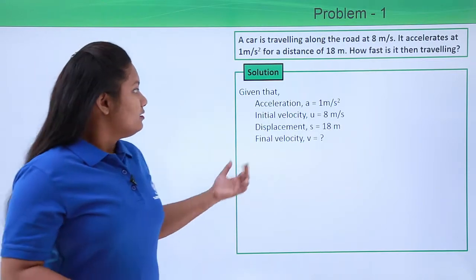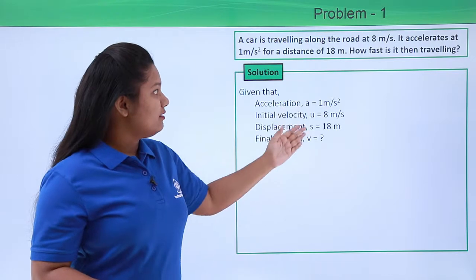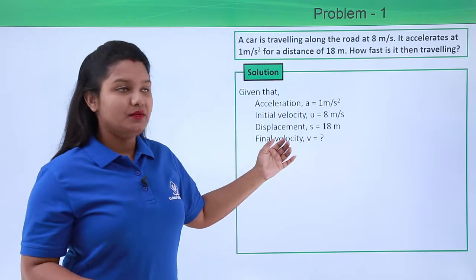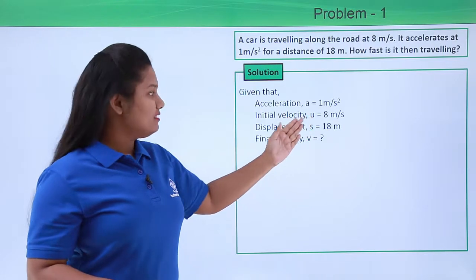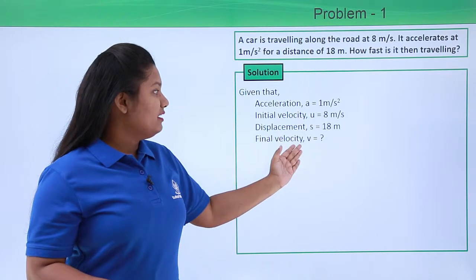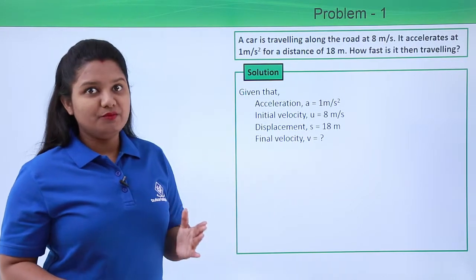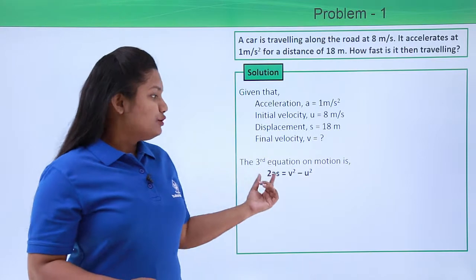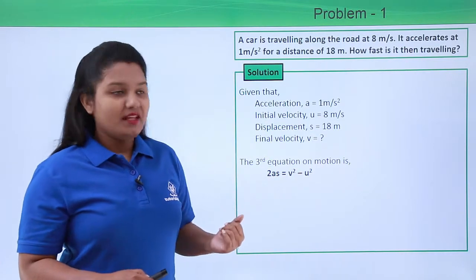In this question we see that there are three parameters given to us: the acceleration a, initial velocity u, and the displacement which is s. And we need to find the final velocity v. We know that the third equation of motion is 2as equals v squared minus u squared.